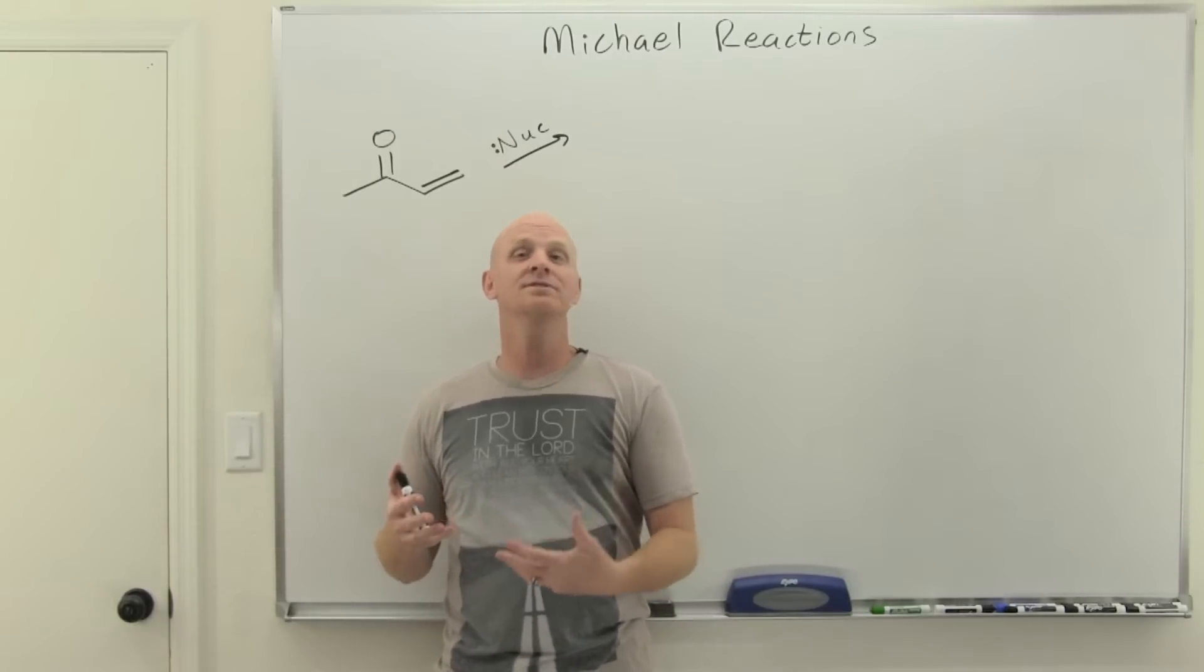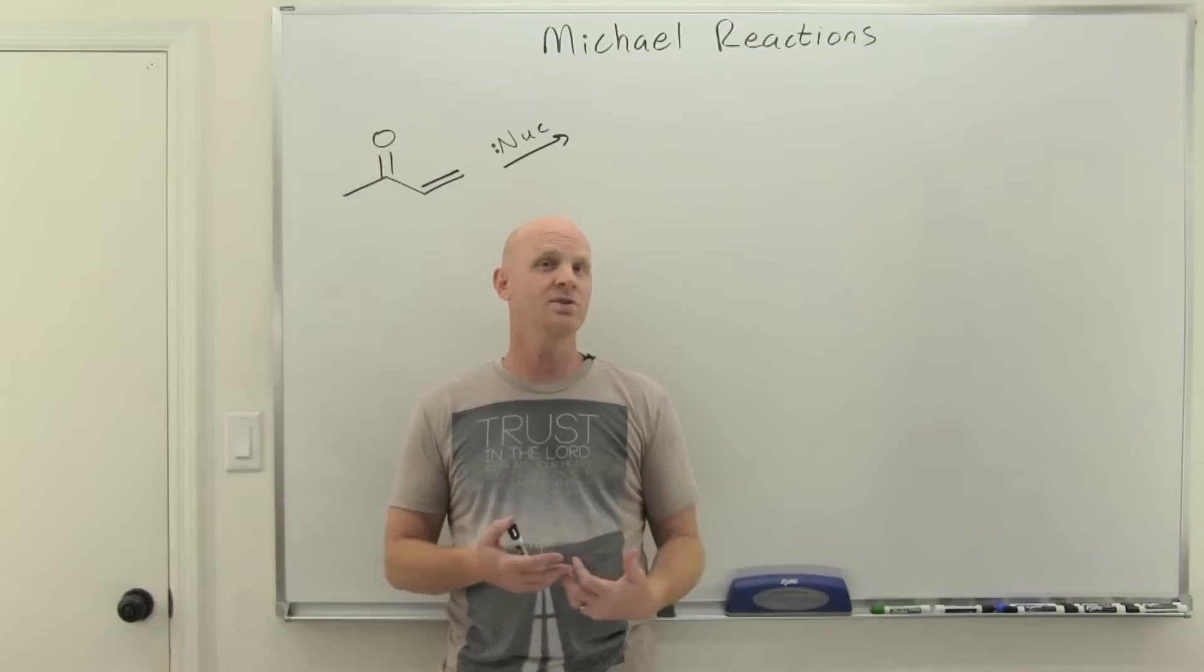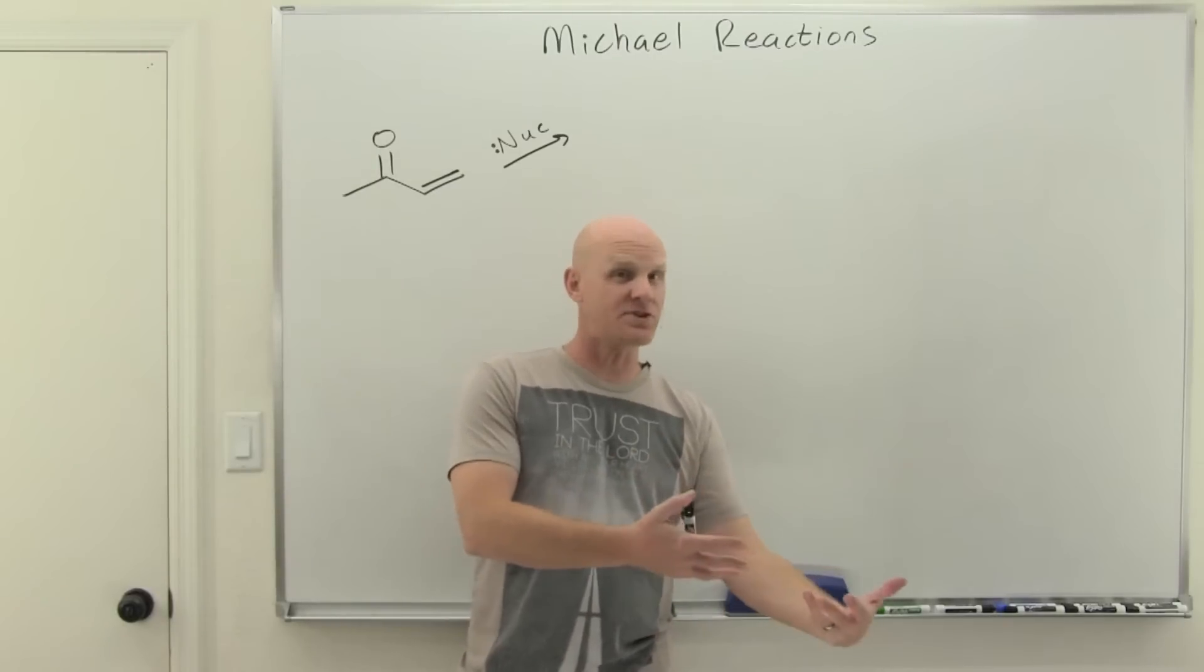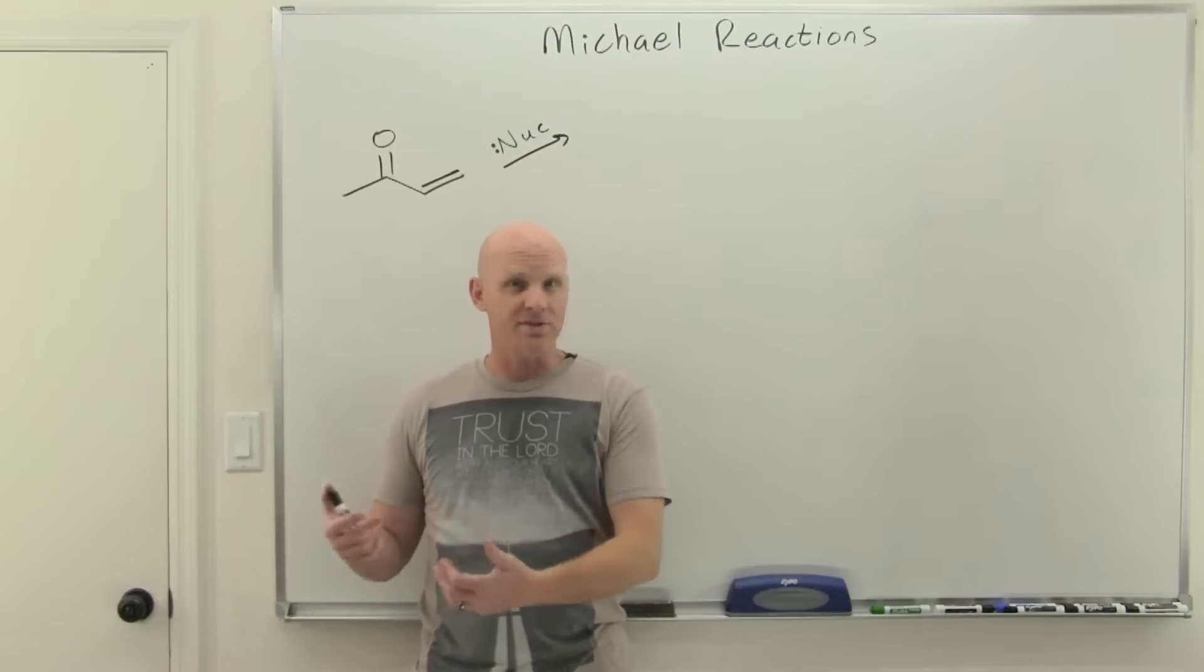Michael reactions physically is nucleophilic addition to a conjugated ketone. The conjugated ketone is always the electrophile, and we might often call it the Michael acceptor. Then we need a Michael donor, which is the nucleophile in this reaction.